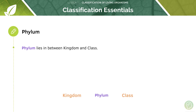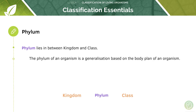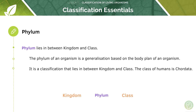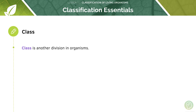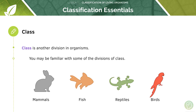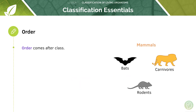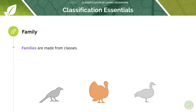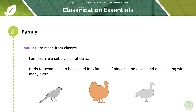Phylum lies between kingdom and class — the phylum of an organism is a generalisation based on the body plan of that organism. Class is another division; familiar examples include mammals, fish, reptiles, and birds — humans are mammals. Order comes after class, so mammals for example are divided into bats, carnivores, rodents, and many other sections. Families are a subdivision of class; birds, for example, can be divided into families of pigeons and doves, and ducks, along with many more.